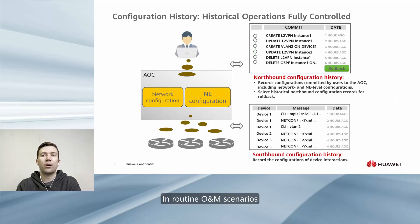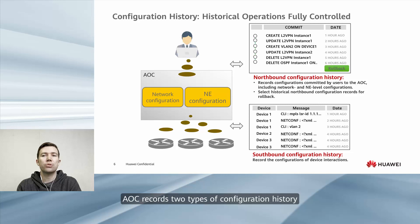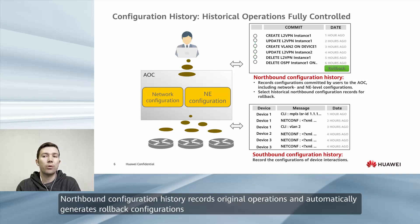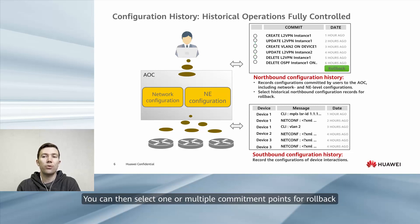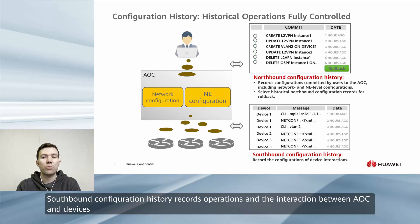In routine O&M scenarios, it's difficult to manually roll back configurations that have been delivered or check the packets delivered to devices. AOC records two types of configuration history: northbound configuration history and southbound configuration history. Northbound configuration history records original operations and automatically generates rollback configurations. You can select one or multiple commitment points for rollback, or select one commitment point and rollback to that point. AOC records a commitment point and corresponding rollback data upon each operation. Southbound configuration history records operations and the interaction between AOC and devices.